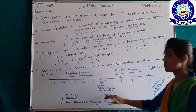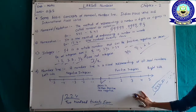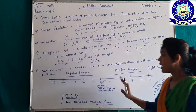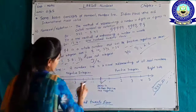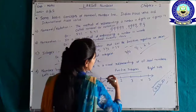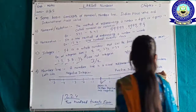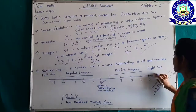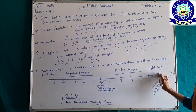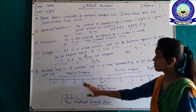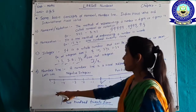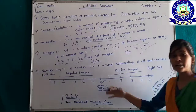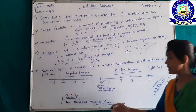Zero is neither positive nor negative. In a number line, when we go to the right side, the number increases. And when we go to the left side, the number becomes negative and also increases in magnitude.